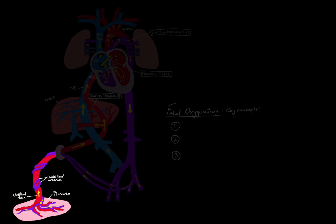The placenta is really the source of oxygen for the fetus. It's the connection between the mother and the fetus that allows separation of blood, while still allowing transport of gases — such as oxygen in and carbon dioxide out — and also a source of hormonal secretion. It connects to the fetus via the umbilical cord, and that cord consists of one vein and two arteries.